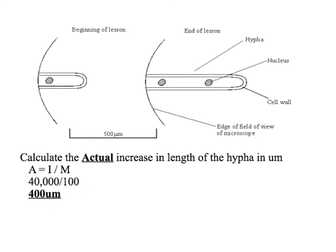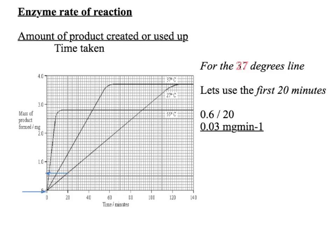You could be asked to work out the enzyme rate of reaction using the formula: the amount of product created or used up divided by the time taken. In this case, we're going to be using the mass of product divided by the time taken, and we're going to do it for the 27-degree line.